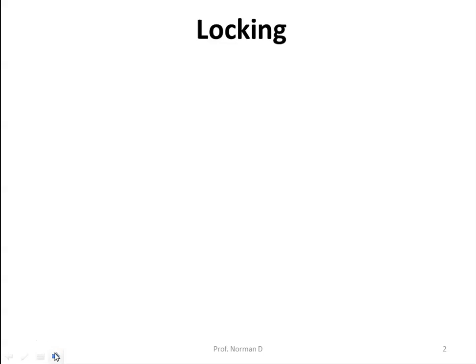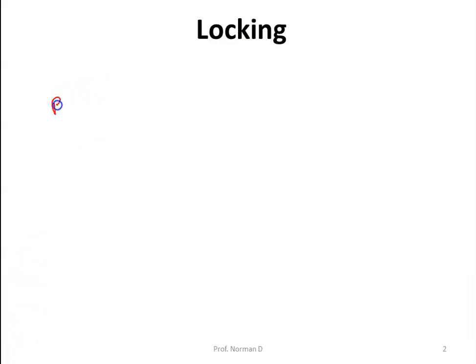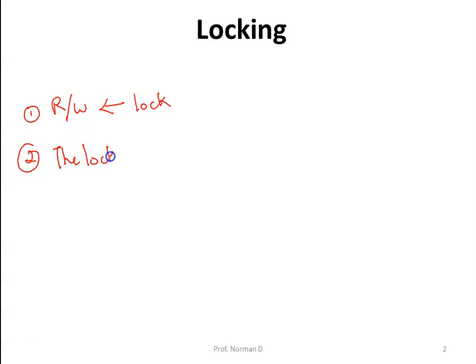The oldest and most widely used concurrency control algorithm is the locking mechanism. In the simplest form, when a process wants to read or write, it first applies a lock on the file.